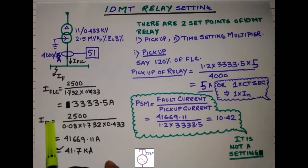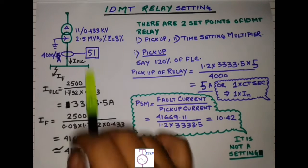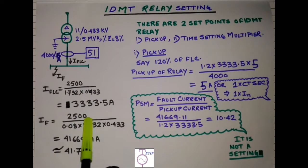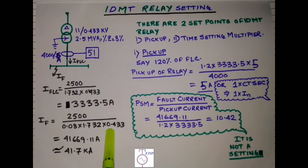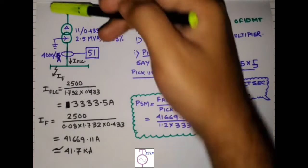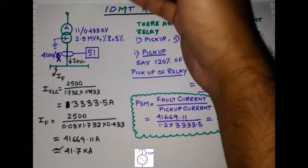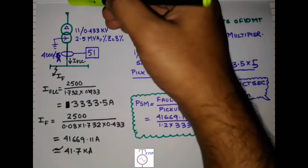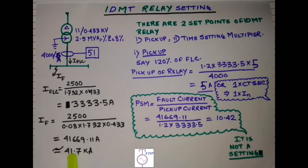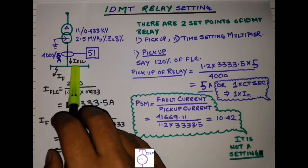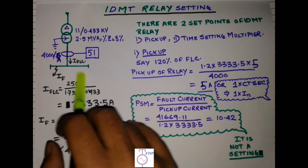And the fault current is 2500 kVA divided by percentage impedance by 1.732 by 0.433. This is around 41.7 kilo ampere. This is ignoring the upstream source impedance, so in actual there will be some upstream source impedance also, so the fault current will be slightly less than this figure.